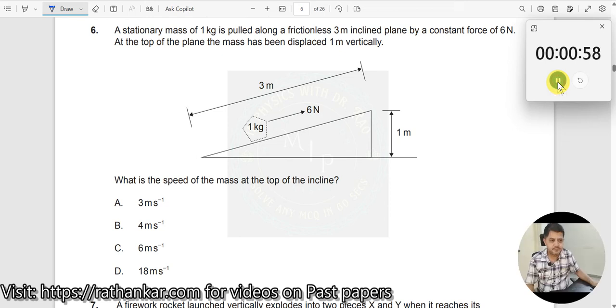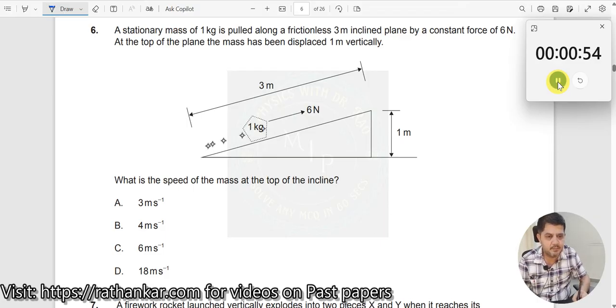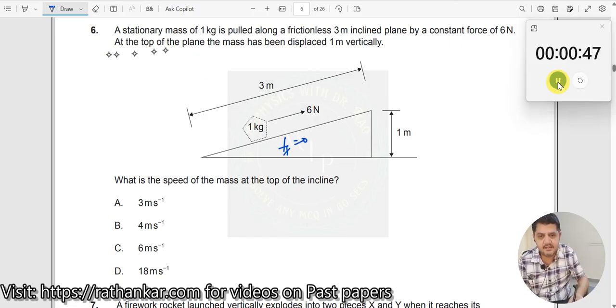Question number 6: A stationary mass of 1 kg is pulled along a frictionless 3 meter inclined plane by a constant force of 6 newton. There is no friction here, friction equals 0. At the top of the plane, the mass has been displaced by 1 meter vertically.